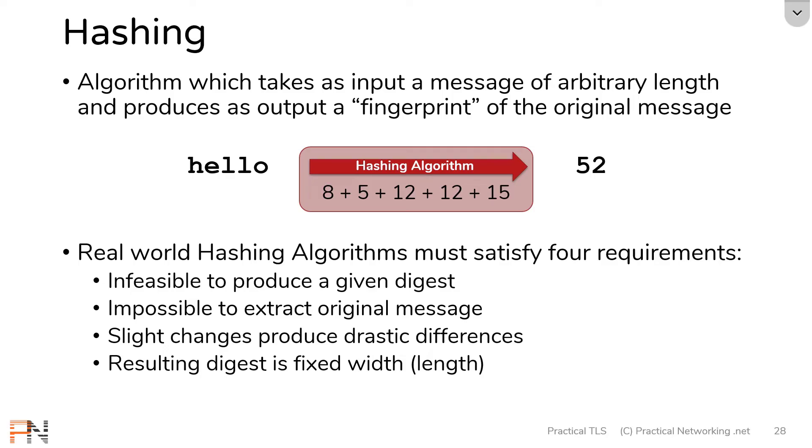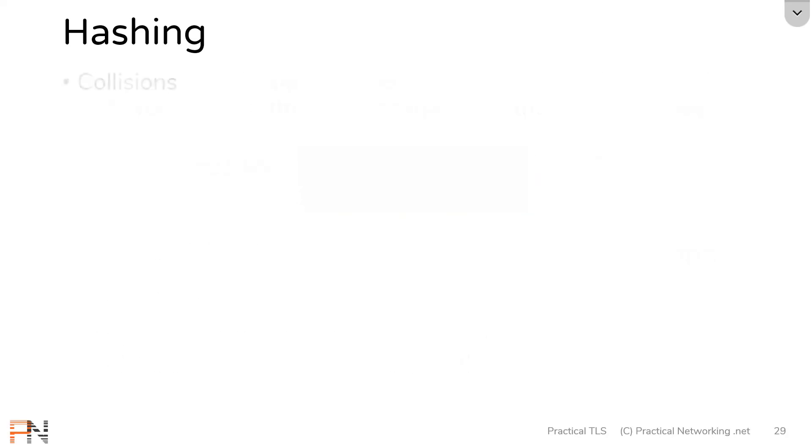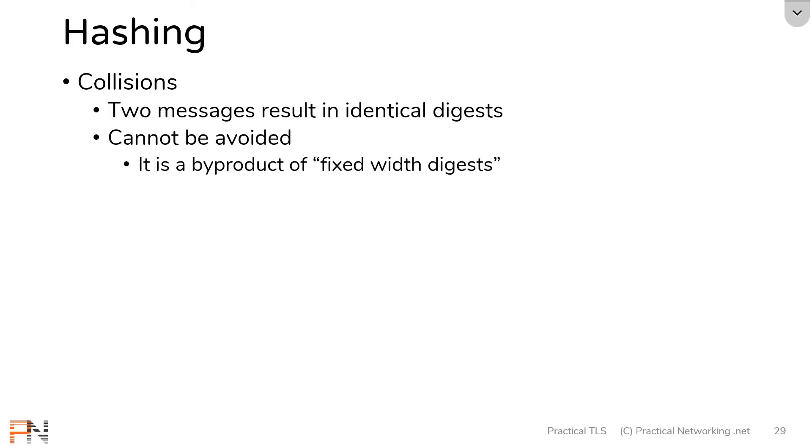Now, the last thing we need to discuss insofar as hashing is this idea of collisions. A collision occurs when two different messages add up to the same digest. This is a bad thing because the purpose of hashing is to compare two messages to see if they're the same or different. Well, if there are two messages that add up to the same digest, then you're never going to be able to tell them apart using a hashing algorithm. So collisions are a bad thing. The problem, however, is that collisions are unavoidable. It's actually simply a byproduct of the idea of fixed width digest.